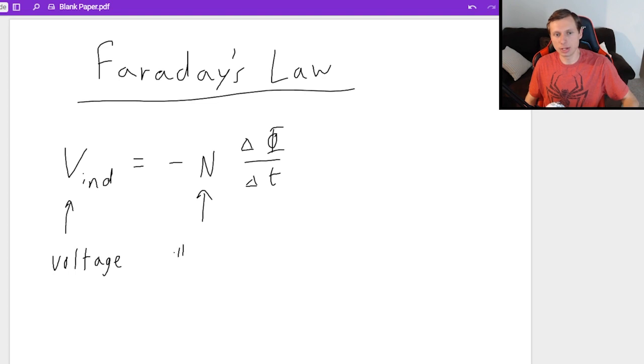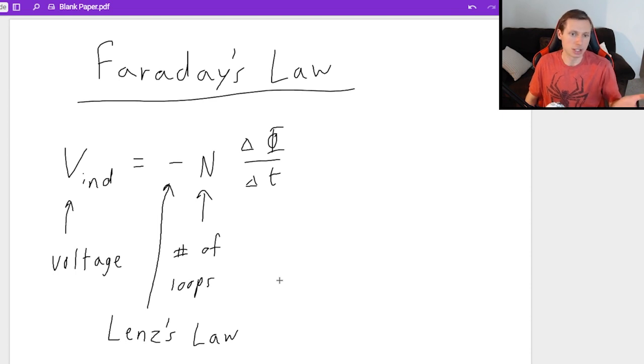N is simply the number of loops. If they don't tell you the number of loops, it is going to be one by default. The negative sign right there is actually used in Lenz's Law, which I will explain after I'm finished with Faraday's Law. And most of the time we ignore that negative sign because we just want the magnitude of the voltage. In other words, if I get a negative voltage for my answer, I'm probably going to ignore it and just make it positive because they usually just want the magnitude anyway.